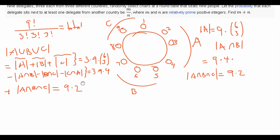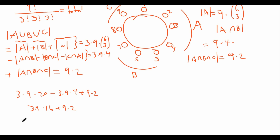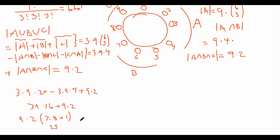Now we evaluate the size of A∪B∪C: (3 × 9 × 20) minus (3 × 9 × 4) plus (9 × 2). Factoring out 3 × 9 from the first two terms gives 3 × 9 × (20 − 4) = 3 × 9 × 16. Then factoring out 9 × 2 from both terms: 9 × 2 × (3 × 8 + 1) = 9 × 2 × 25 = 18 × 25 = 450. So the total number of unfavorable arrangements is 450.